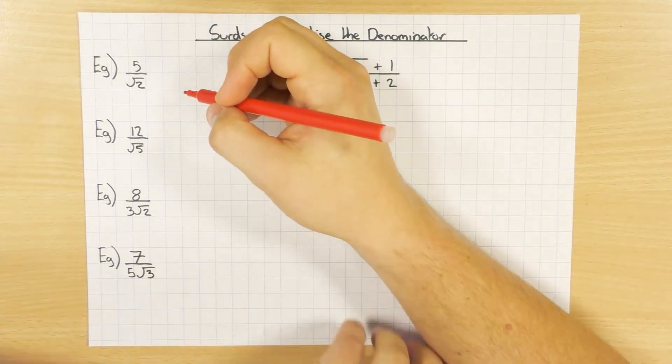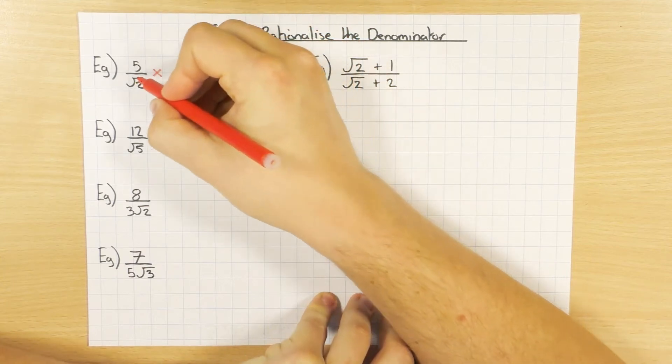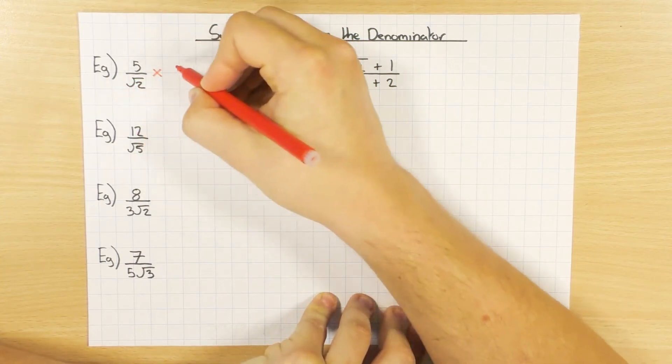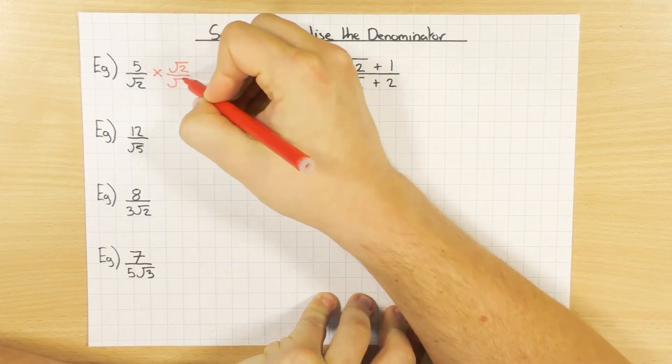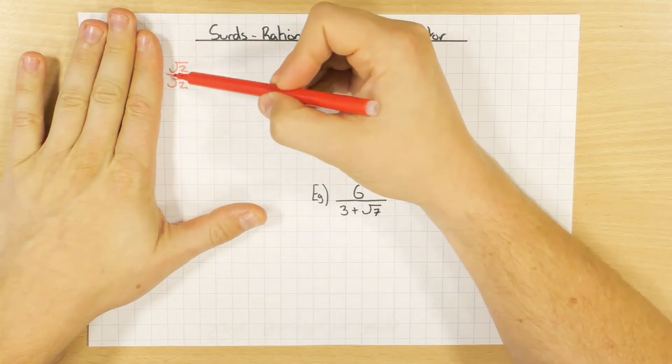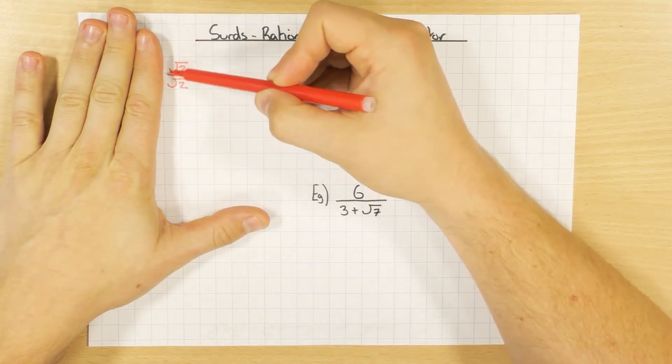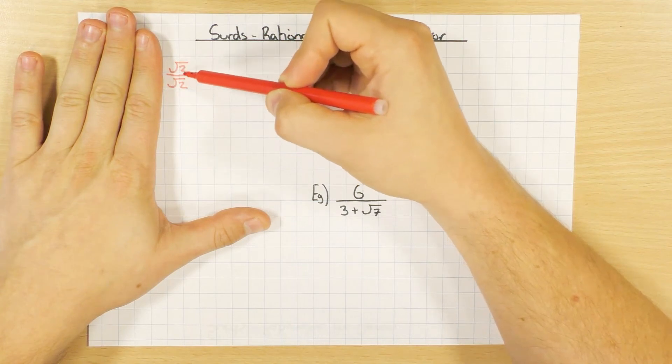So to do that, what we do is we times it by another fraction, and the other fraction is the square root of 2 divided by the square root of 2. Now the reason why we can do this is if I just look at the square root of 2 divided by the square root of 2, essentially that's 1. Because how many times does that go into that? It goes in once.